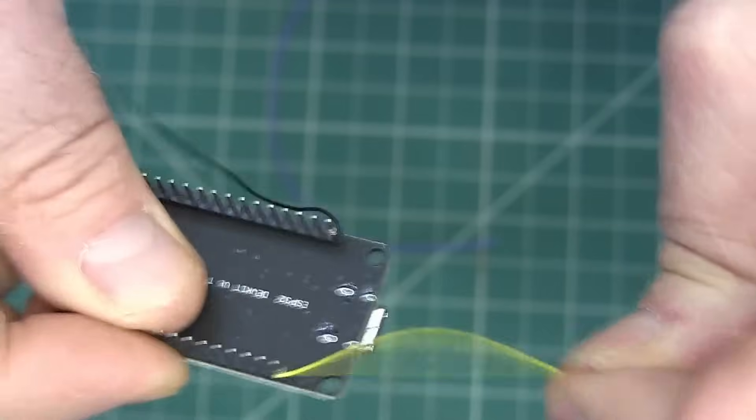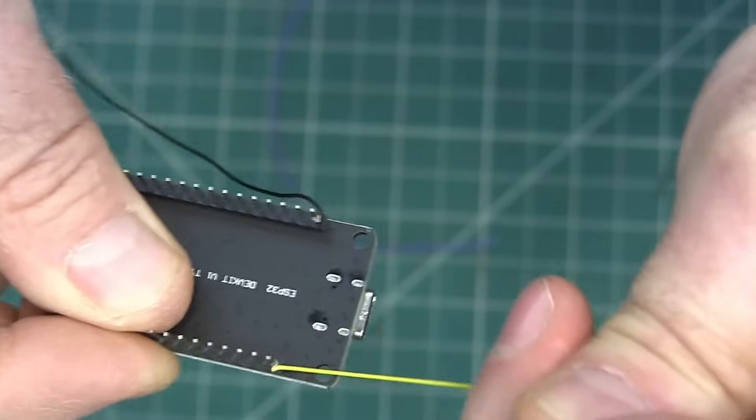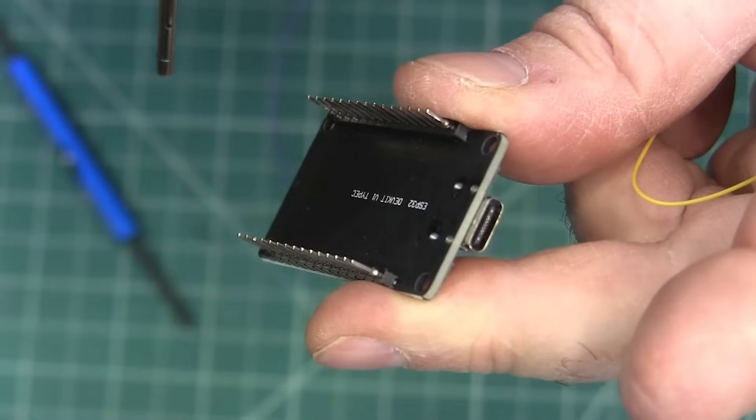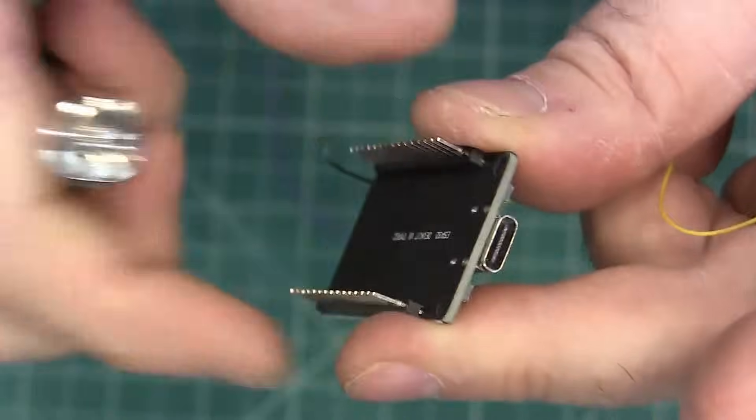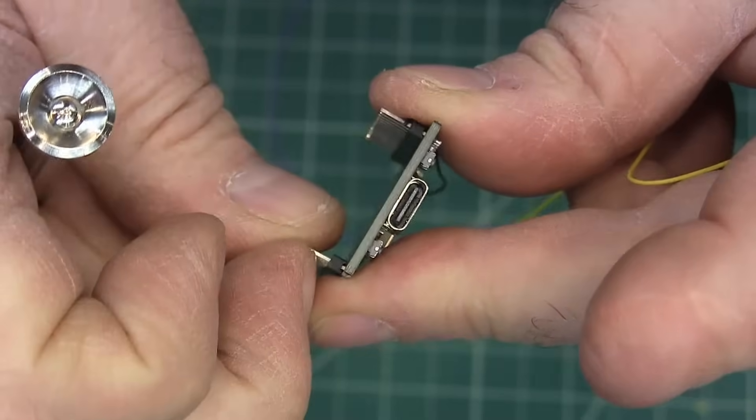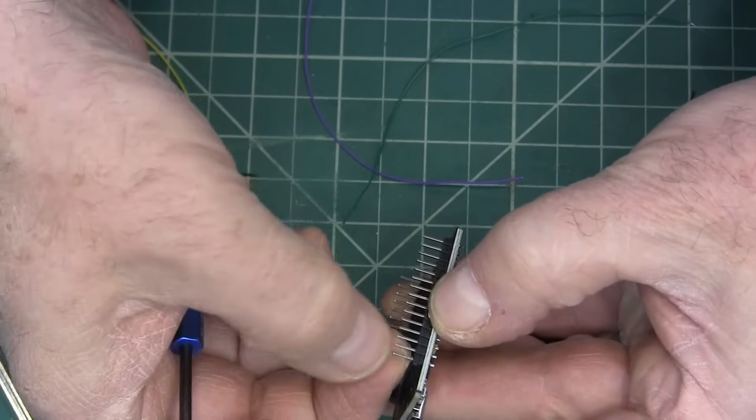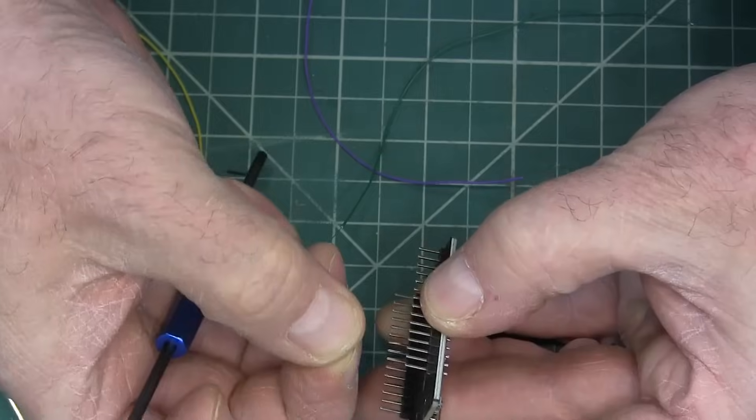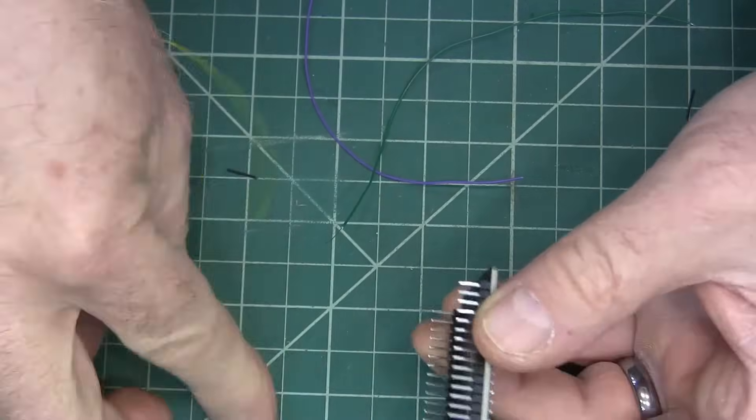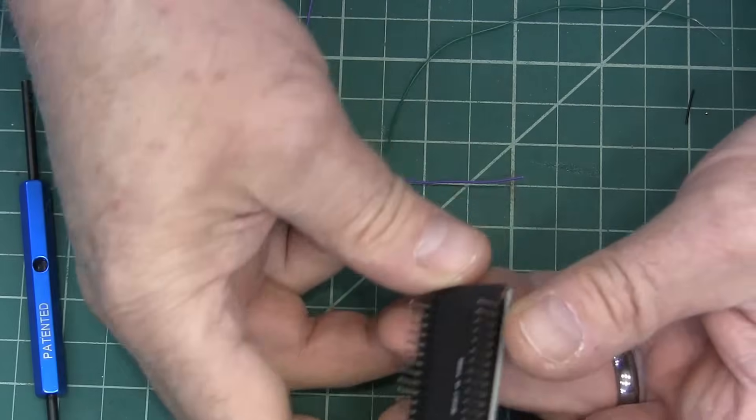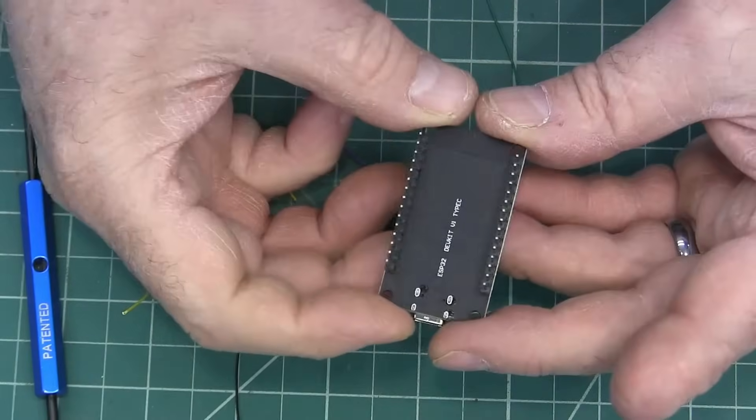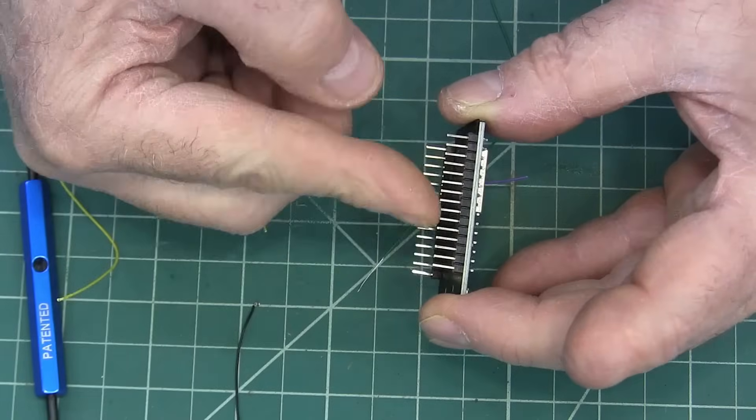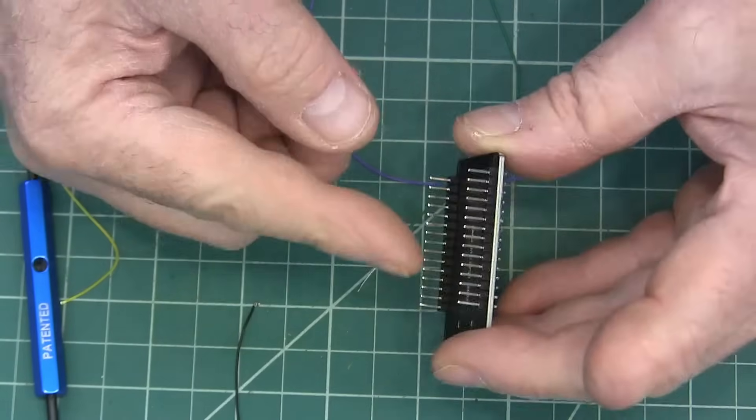But you can see, those are on there snug. They're not going to come off. You can see it broke off. It didn't unwind itself. Usually you can grab it with something and pull them off like that to get them to come loose. But then my component is just like it was when I started.